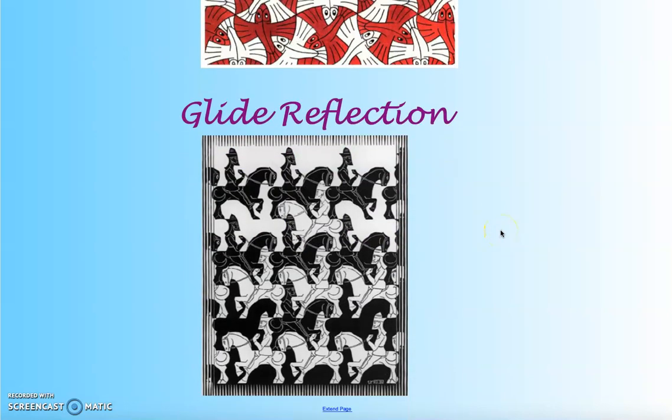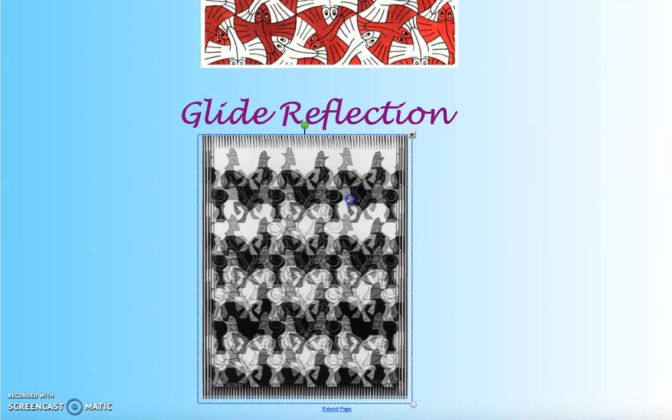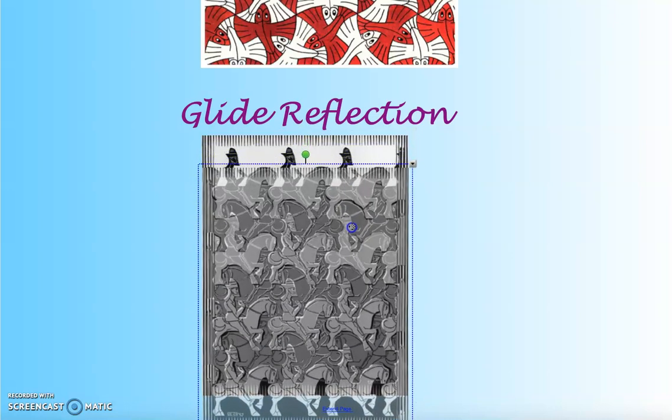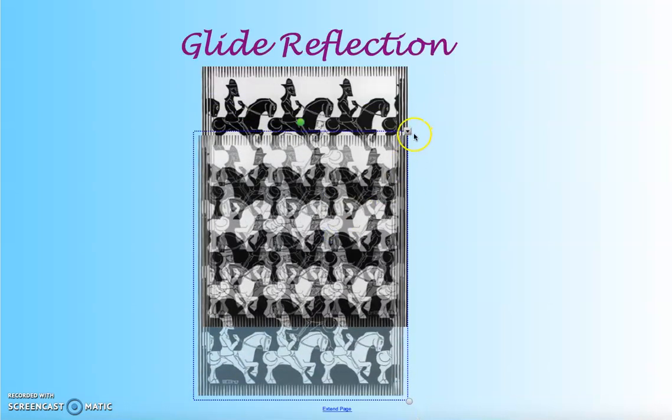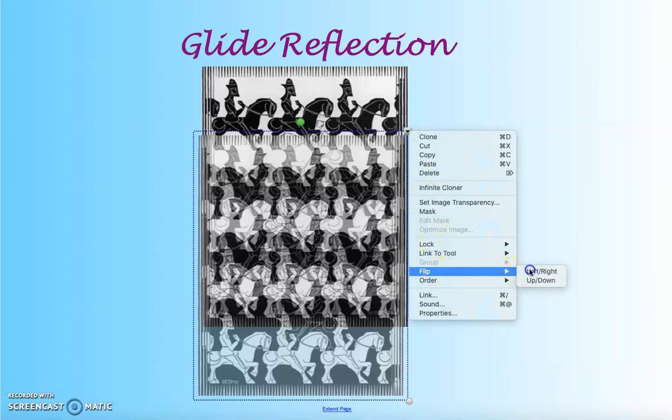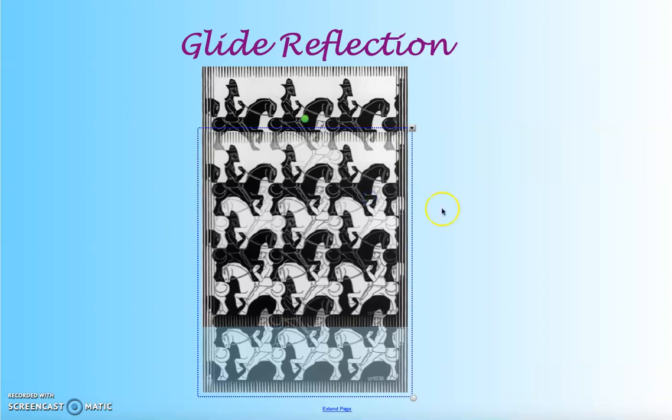And finally, a glide reflection. To go from this black horse down to this white horse, we have to do two things. We have to slide or glide it down, and then we have to flip it left or right. So if I take this first sheet, and I flip it left or right, and now I slide it down, you see that the horses line up. And again, I can slide it back down, and I can flip it left to right, and we end up with black on black and white on white for those horses. Those are our three main types of reflections, and we'll go through how you can make those in a future video.